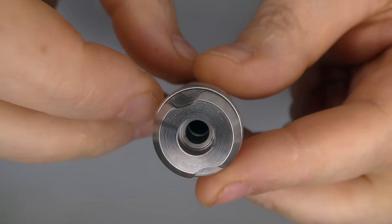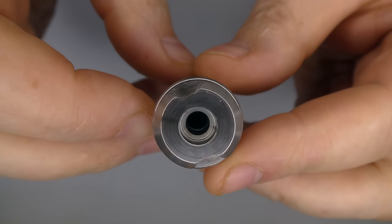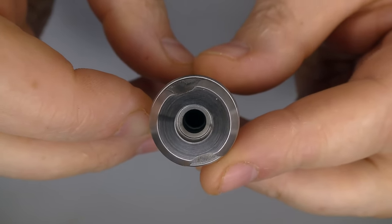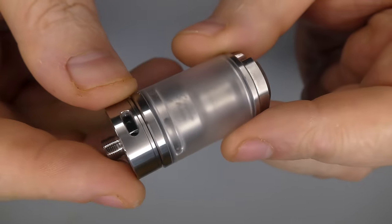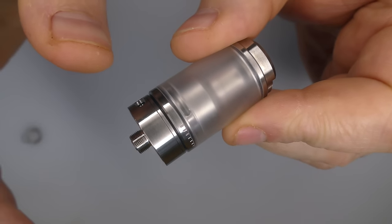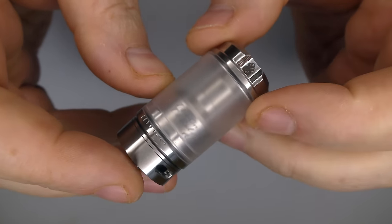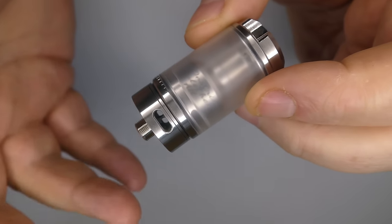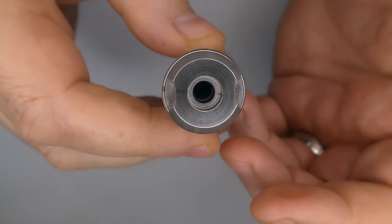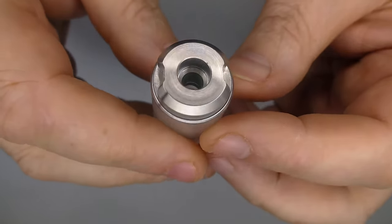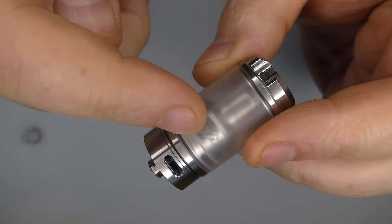I've got a double o-ring affair and your standard 510 drip tips will fit in there. Now the bore on the chimney in here is 5.8mm. This is, in my humble opinion, restricted direct lung or with the 4mm is direct lung and it does it really well.